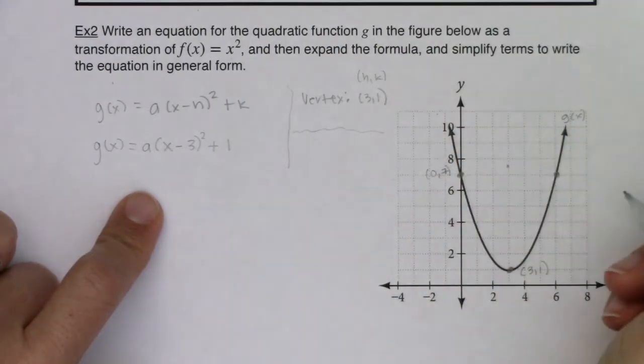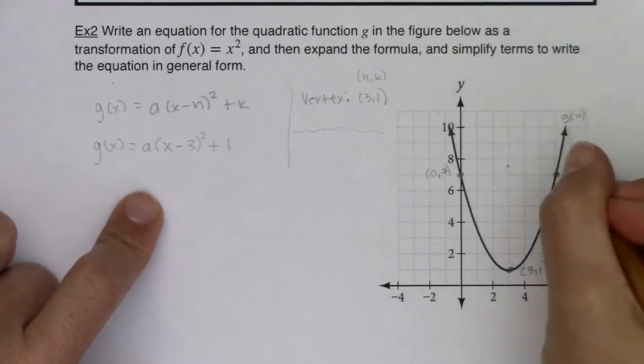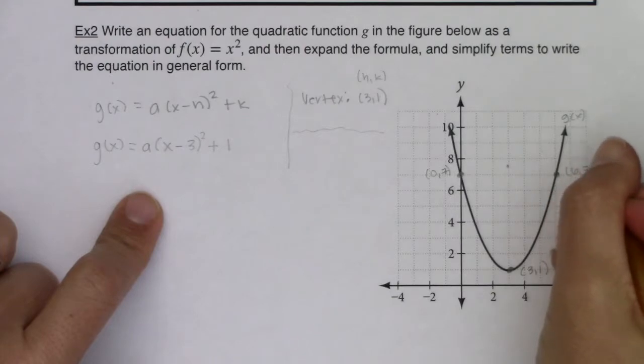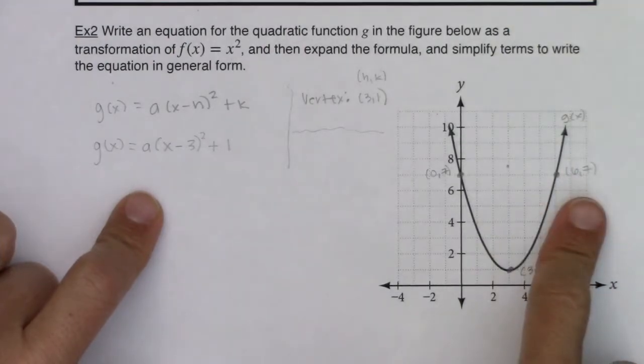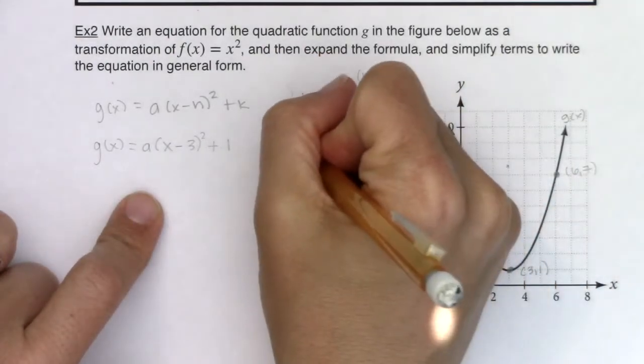This is the ordered pair (0, 7). It looks like this was the ordered pair (6, 7). I could use either of these, but I'm going to opt to use (0, 7).